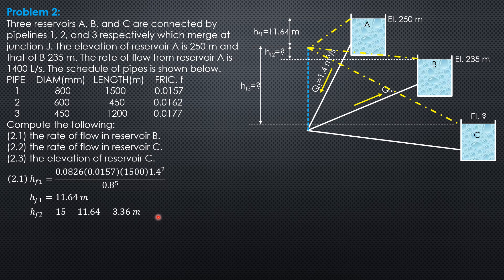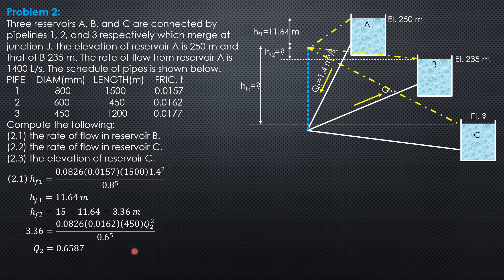From this head loss, we can compute the discharge. 3.36 equals 0.0826 times 0.0162 times 450 times Q2 squared, divided by 0.6 to the fifth. So the discharge in pipeline 2 is 0.6587 cubic meters per second — 658.7 liters per second — and that is inflow to reservoir B.